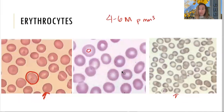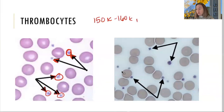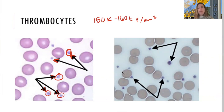Thrombocytes are pieces of a cell, not whole cells, so there is no nucleus inside — just like red blood cells have no nucleus. That's why red blood cells have a max life of 120 days; platelets are even shorter at only nine to twelve days. Their numbers are anywhere from 150,000 to 160,000 per cubic millimeter, and their job is hemostasis — keeping your blood in the same place, in your body.